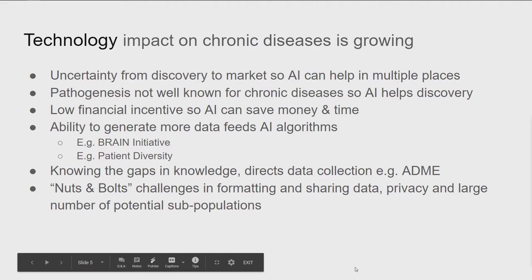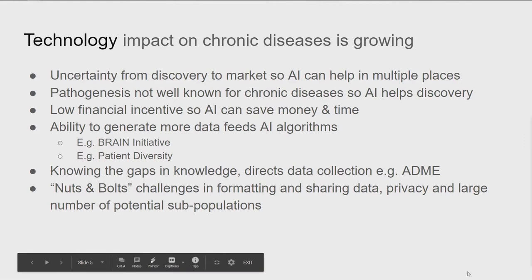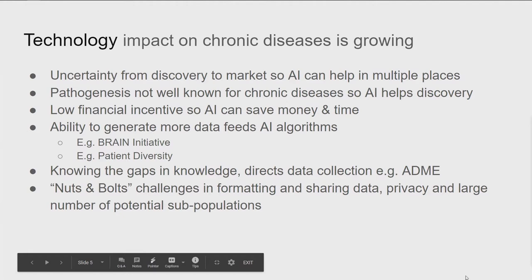One of the exciting things about the application of these technologies, especially artificial intelligence, is that in chronic diseases — as we've heard from many speakers — the pathogenesis is not well understood. This is where AI can actually help, since you have a large array of data that's hard to process. Additionally, there's a low financial incentive to cure chronic diseases, so people are trying to use AI to save money and time in the development process. That's also a good fit.